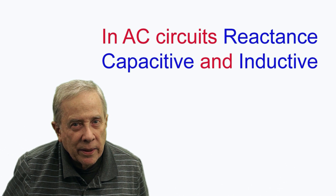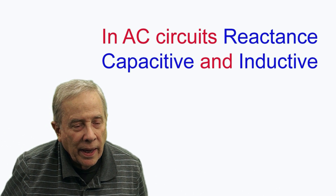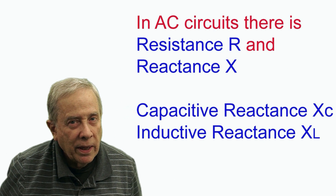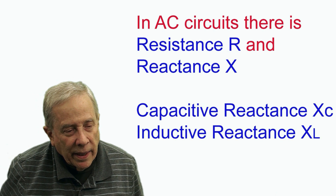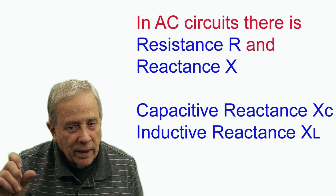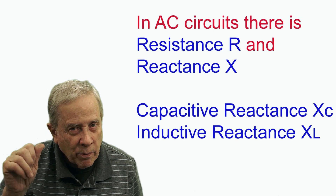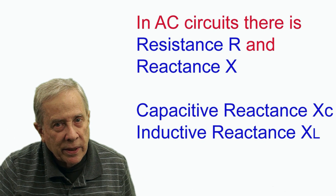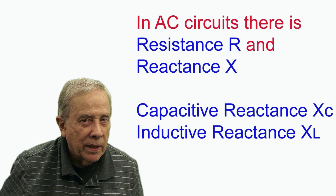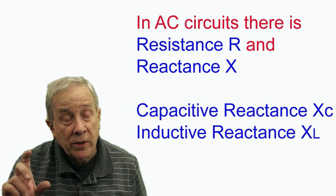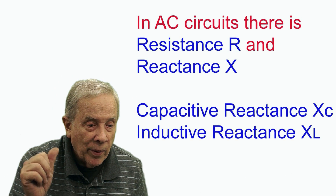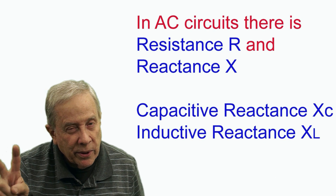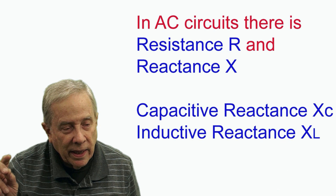In AC circuits a couple of other things come into play and they're called reactance. Reactance — it's reacting to the alternating current — and reactance comes in two forms. It can be capacitive reactance and it can be inductive reactance.